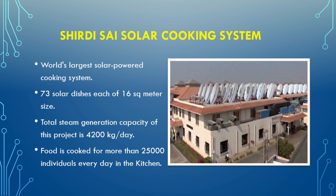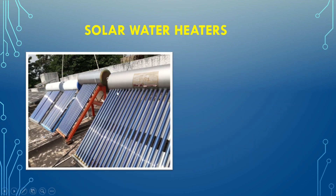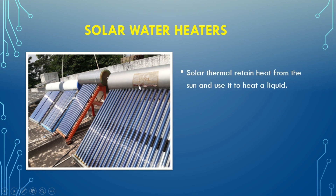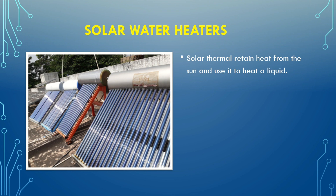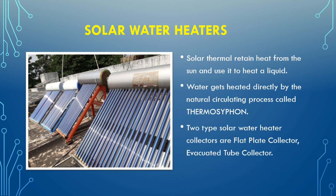Solar water heaters are also based on solar thermal power. They use the heat energy of the sun to provide hot water in winters. This hot water gets stored in a tank by a natural circulating process called thermosyphon. The heating of water is done in tubes, and there are two types: evacuated tube type solar water heaters and flat plate collector type.